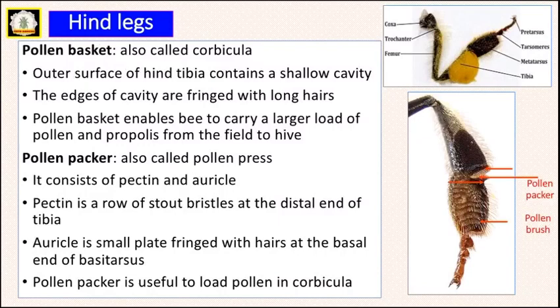The hind legs contain three important structures. First is the pollen basket, also called the corbicula. The outer surface of the hind tibia contains a shallow cavity whose edges are fringed with long hairs. The pollen basket enables the bee to carry a larger load of pollen and propolis from the field to the hive.